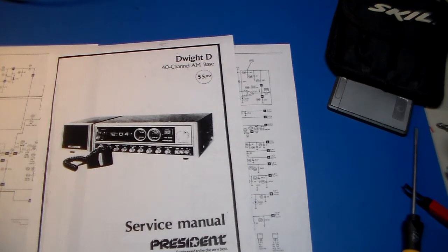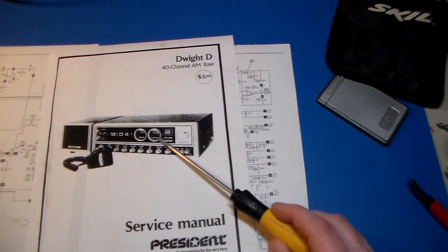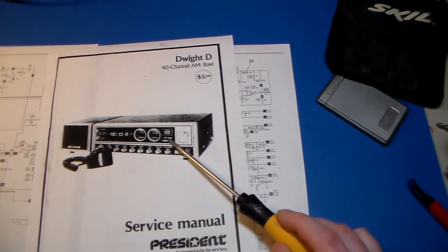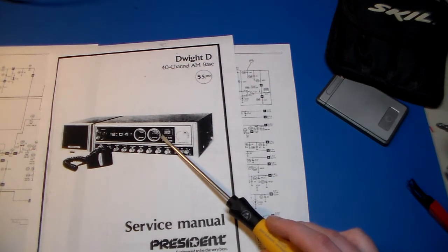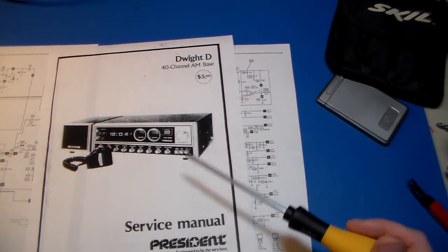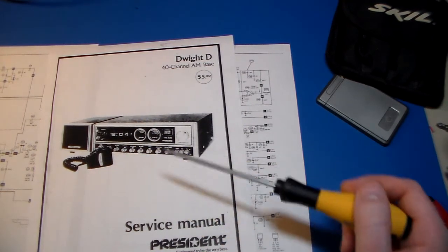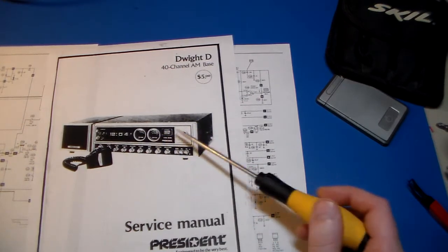But he demonstrated the problem with the radio, and one thing jumped out at me. When he went from CB to PA and vice versa, this on air indicator when he was in CB mode was illuminated. It should not be illuminated. That radio is not transmitting. So why is that lit up? Coupled with the volume doing the funky thing, something's gone very wrong with this.